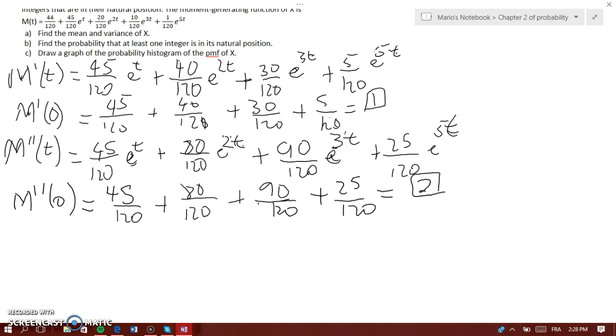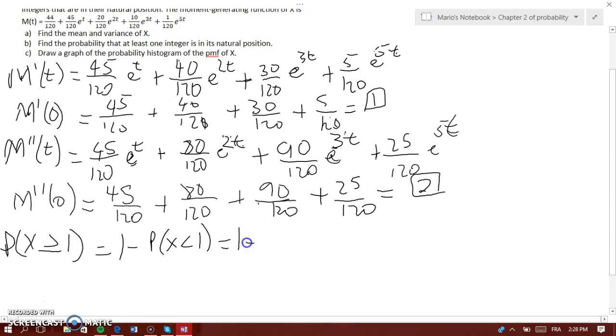Now, it says find the probability that at least one integer is in its natural position. So basically, the probability that X is greater than or equal to 1. But we have 5 integers, so it would be better to find 1 minus the probability that none of them is in their natural position. That would be 1 minus the probability that X is less than 1, which would be 1 minus the probability of X equals 0.